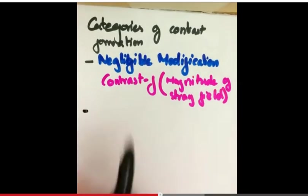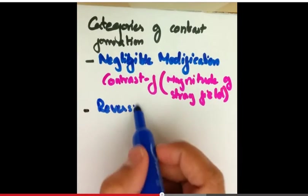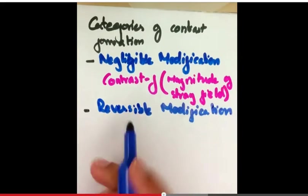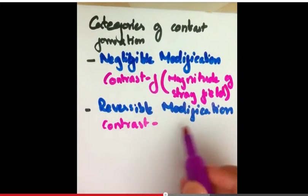In reversible modification, as the tip passes through the sample, the tip sample position is modified, and it reverts to the initial state after the pass. In this case, the contrast is a function of the tip sample position.